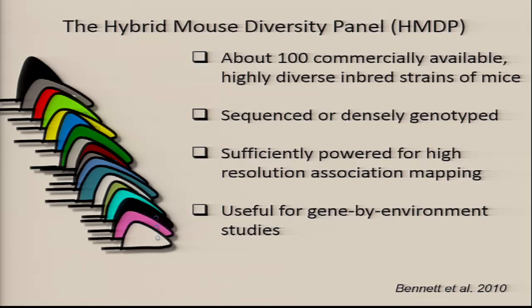All of these strains have been sequenced or very densely genotyped, so we know their genetics. We picked about 100 strains to give us sufficient power to map complex traits using association, which gives much better resolution than linkage. We're particularly interested in gene-by-environment studies. Inbred strains are great for this because you can look at the same genetic background under different environmental conditions.